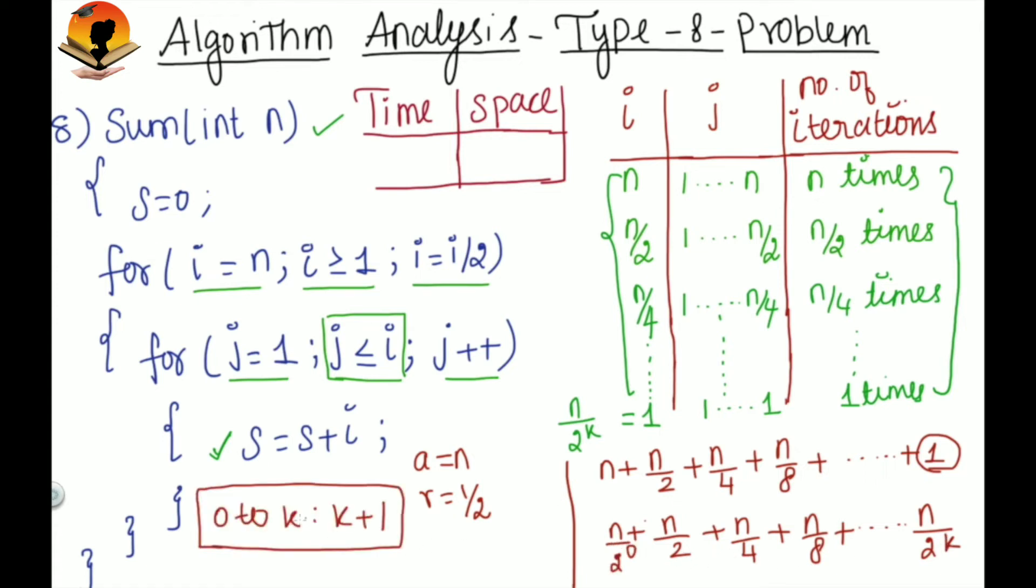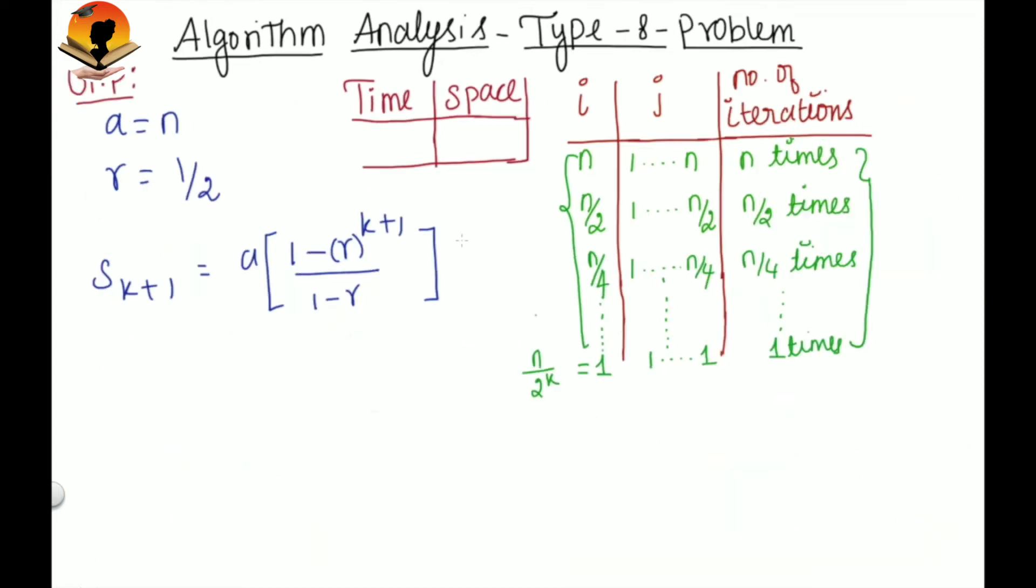Therefore, we have to find out the sum for k plus 1 terms with the starting term as n and the common ratio as 1 by 2. So this is the formula for geometric progression.